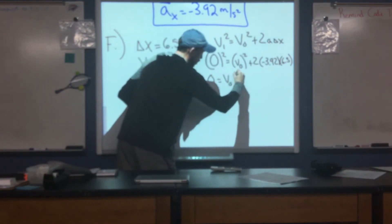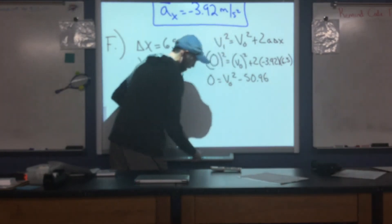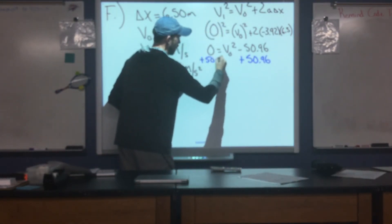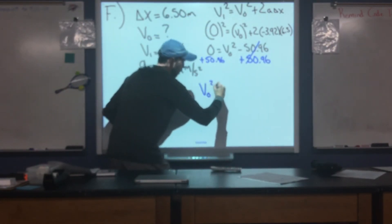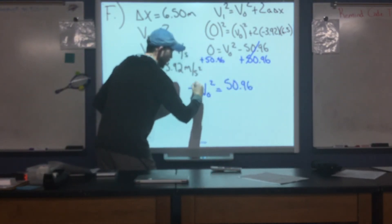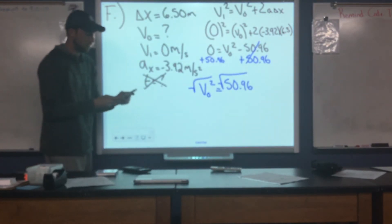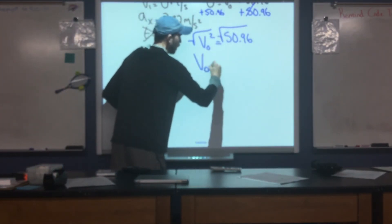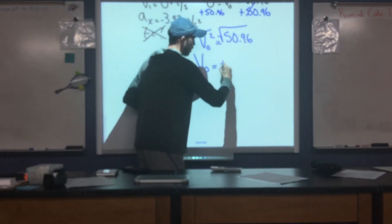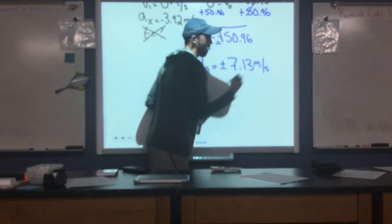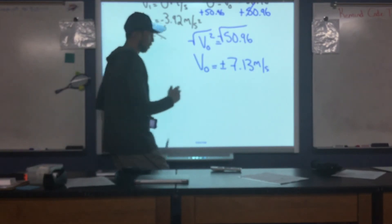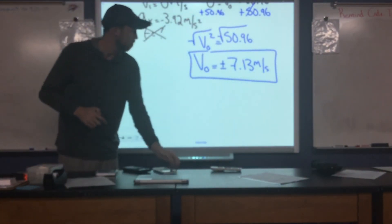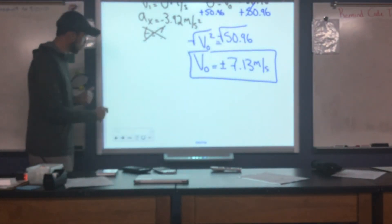So v₀² = 50.96, and taking the square root gives about 7.13 meters per second. We use the positive value because the cars collided and moved to the right based on our picture. So now we know the velocity of the cars right after they collide — this would be their shared velocity. The problem now asks us to come back to the momentum equations we wrote at the beginning.